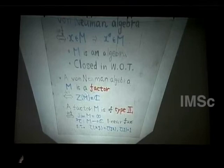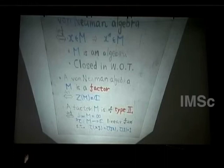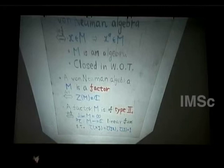A von Neumann algebra is called a factor if its center is trivial — equal to the complex numbers. A factor M is of type II₁ if it is infinite-dimensional and there exists a trace τ: a linear function satisfying the trace condition τ(xy) = τ(yx) and a normalizing condition. This is a II₁ factor, as you already saw in Sturinibusson's talk.